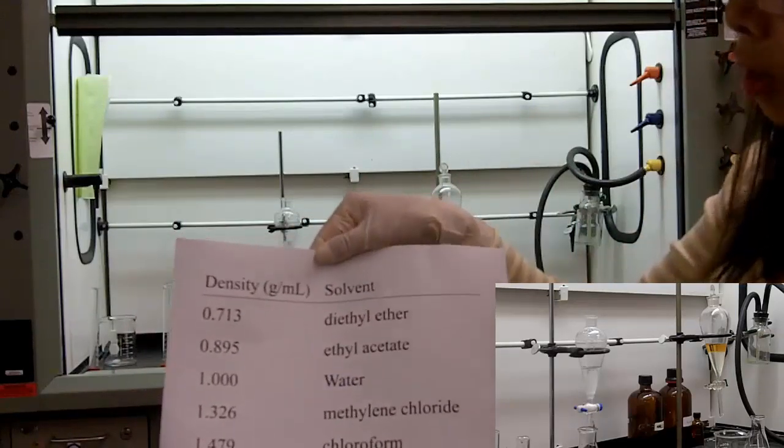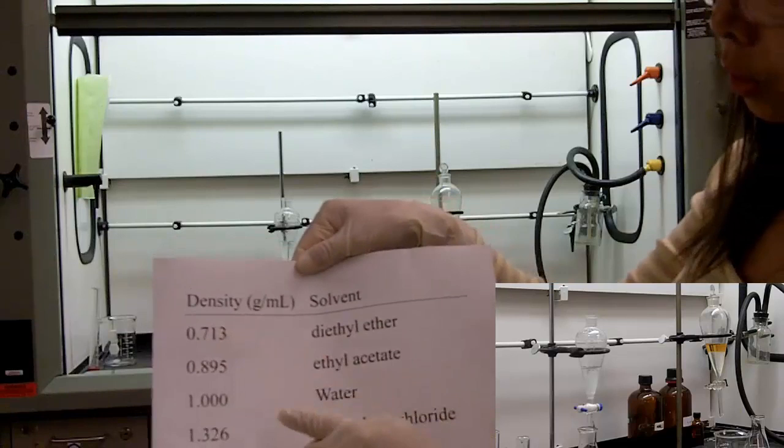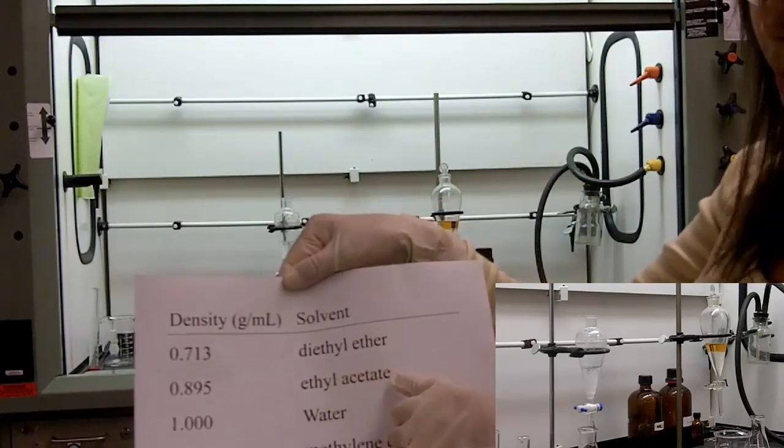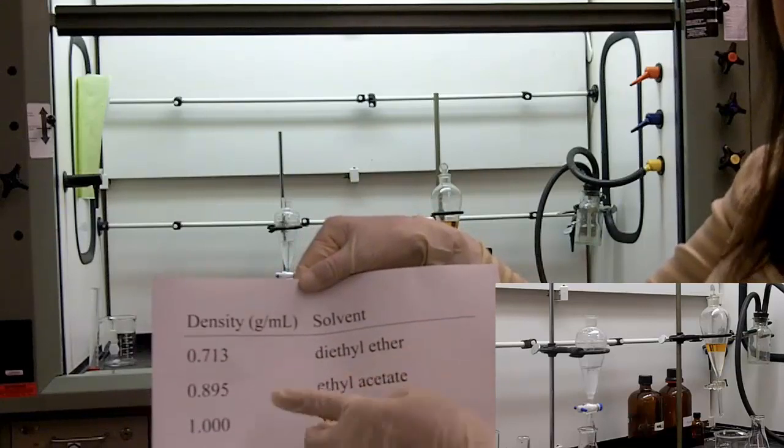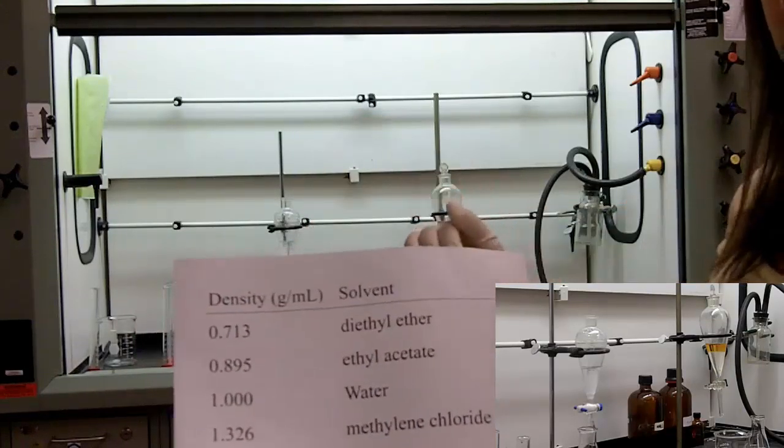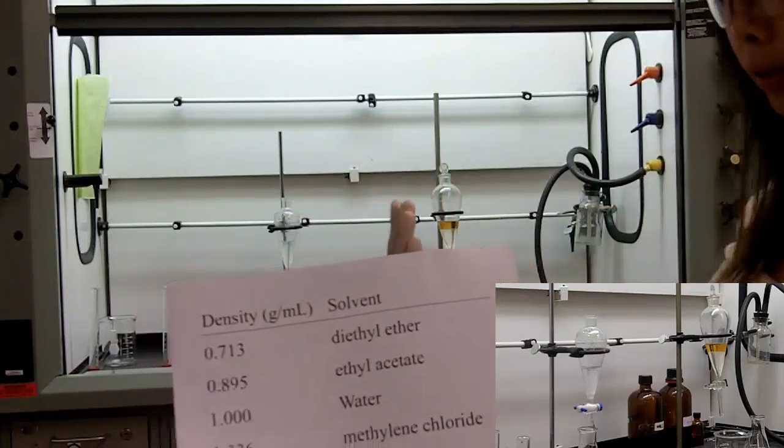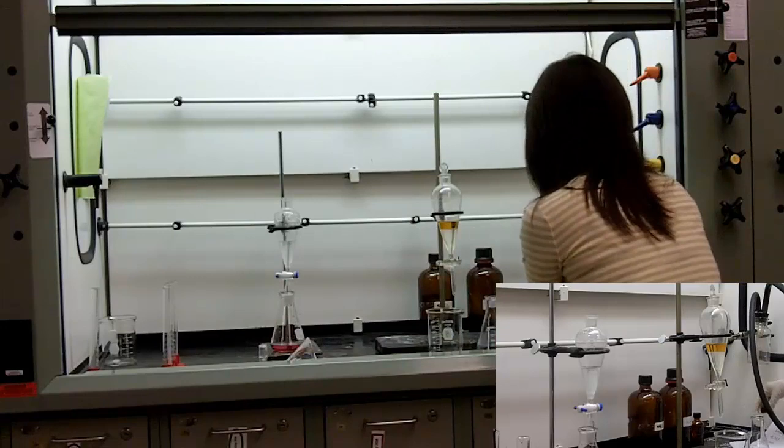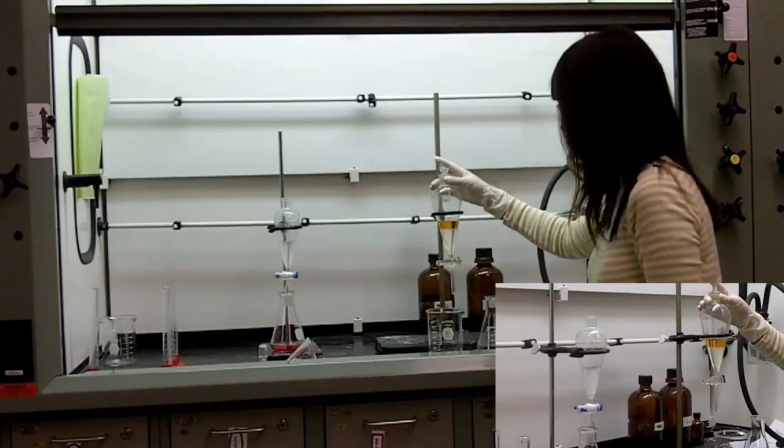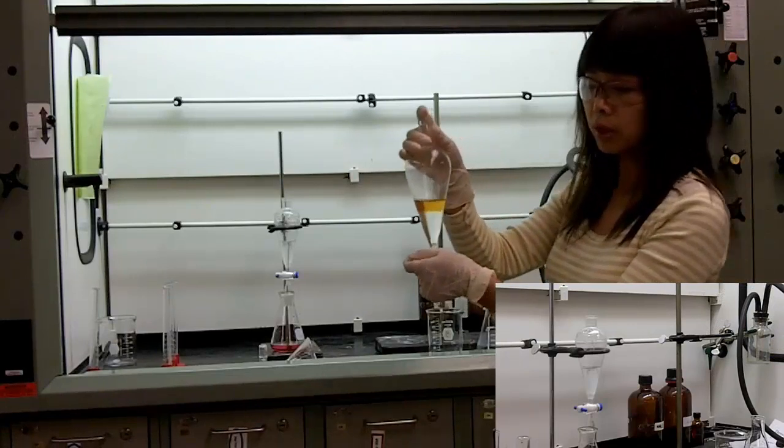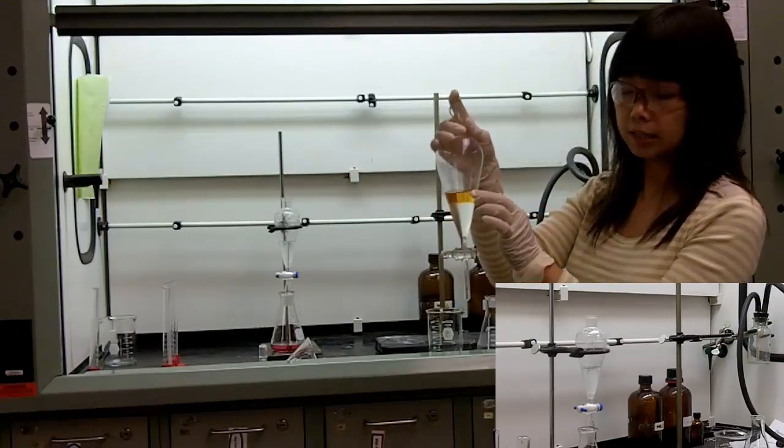But if your organic solvent is lighter than water, which includes most commonly used organic solvents such as ethyl acetate or diethyl ether, they are lighter than water. So when you do the acid-base extraction, your organic layer will be the top layer.